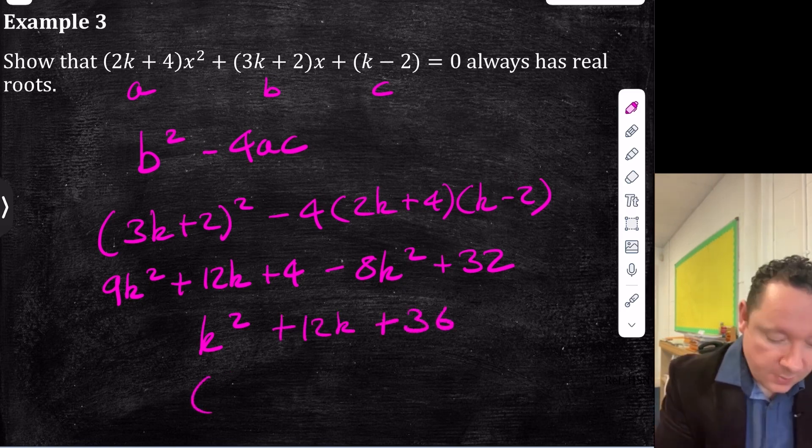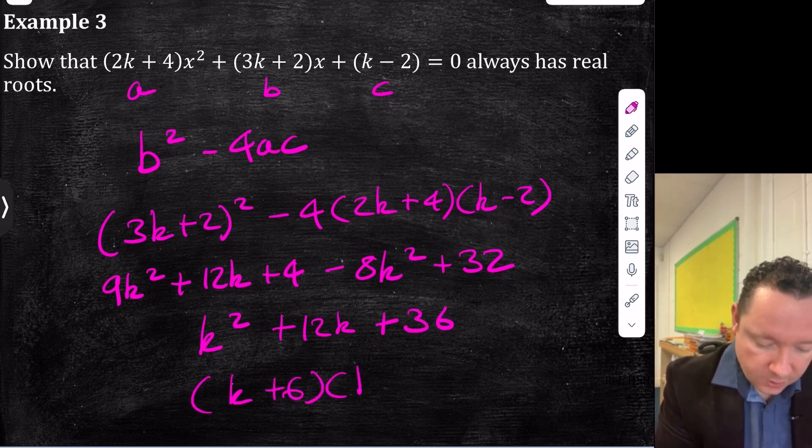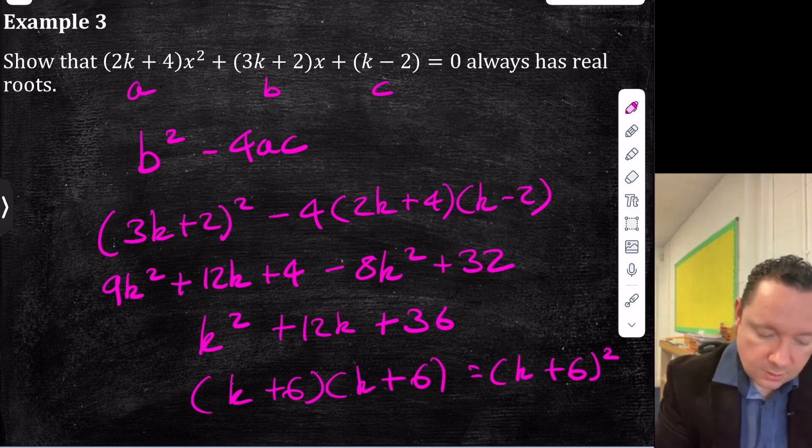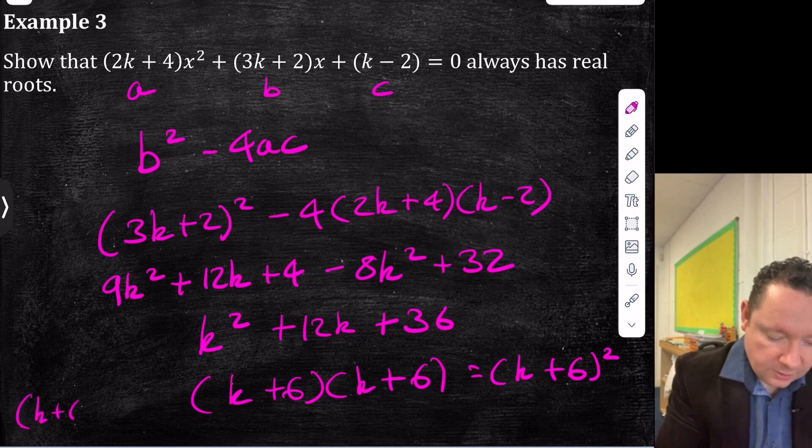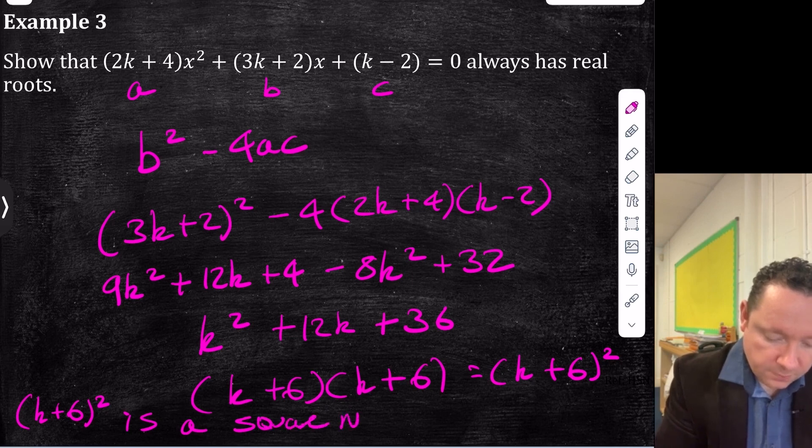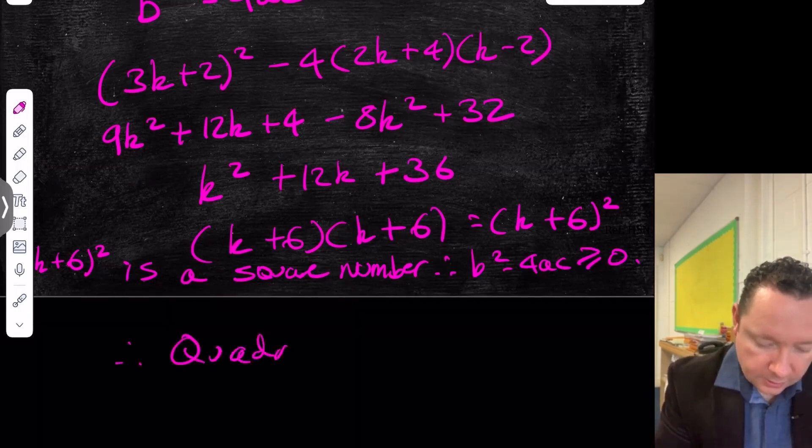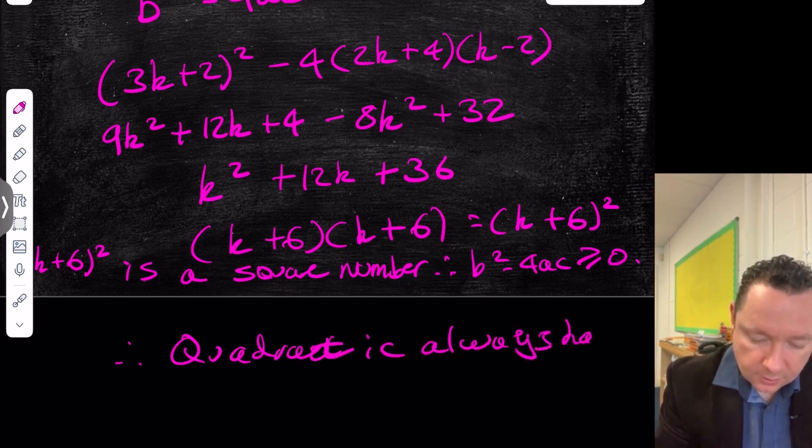So now we can try and factorise that, because we've got k plus 6, k plus 6. Well, that's the same as (k + 6) all squared, which is a complete square. So since it is a complete square, we can then just say that (k + 6) squared is a square number. Therefore, b squared minus 4ac is always greater than equal to 0. And therefore, the quadratic always has real roots. And we're done there.